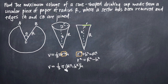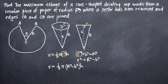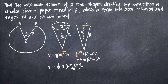Now we really have our volume equation in terms of one variable. It looks like two variables, but capital R is actually a constant — we've been told the radius equals R, and R will never change. So the only true variable is h. What we're going to do is simplify the volume equation, take its derivative with respect to h treating capital R as a constant, set it equal to zero, and solve for h.